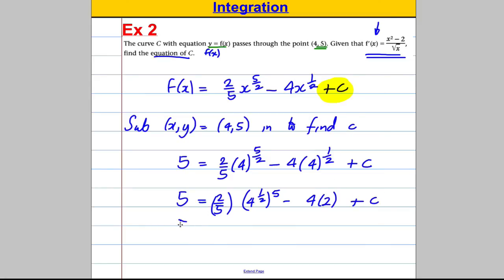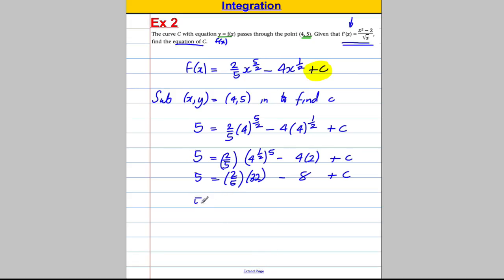Let's see if we can do this bit. 5 is equal to, keep the 2 fifths for now, 4 to the half is 2, 2 to the power of 5 is 32. Take away 8 plus c. Therefore, 5 is equal to, 32 times 2 fifths, that's 32 over 1 times 2 fifths, which is equal to 64 over 5.